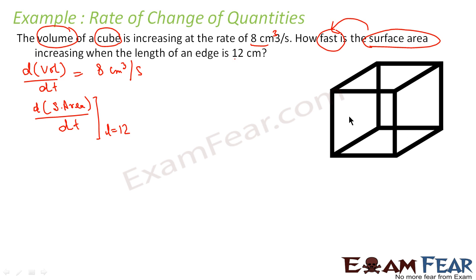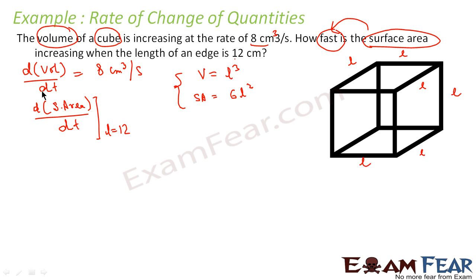The volume of a cube with edge l is V = l³, and the surface area is SA = 6l². We need to find d(SA)/dt. Since SA = 6l², by the chain rule d(SA)/dt = d(6l²)/dt = 6 × 2l × (dl/dt) = 12l × (dl/dt). We know l = 12, but we still don't know dl/dt.